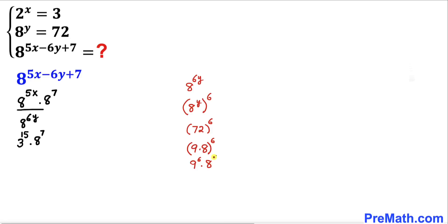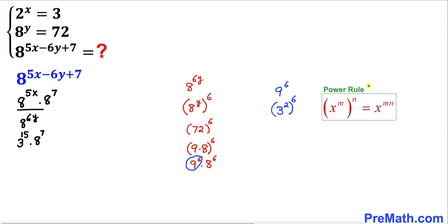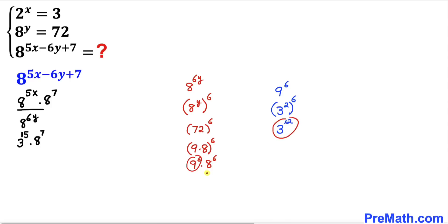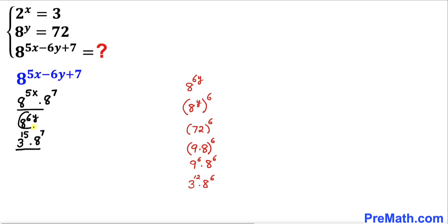Now let's focus on 9^6. We know that 9 = 3^2, so we can write this as (3^2)^6. Applying the power rule once again, this becomes 3^(2 × 6) = 3^12. So we replace 9^6 with 3^12, making the full denominator 3^12 × 8^6.